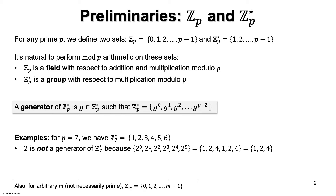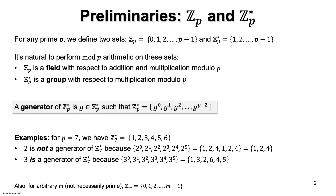What about 3? 3 is a generator since the powers of 3 are 1, 3, 2, 6, 4, 5, which is the entire set Z*P.